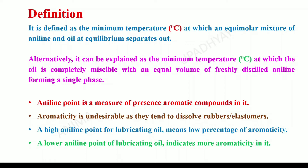Aniline point is important because it gives us information about the presence of aromatic compounds dissolved in the given lubricating oil. If the aniline point is high, it states that the aromaticity present in the lubricating oil is low. But if the aniline point is low, it suggests that the aromaticity in the given oil is high, and high aromaticity is undesirable. So a lubricating oil with a low aniline point is not recommended for machines having parts made up of rubber or elastomers.